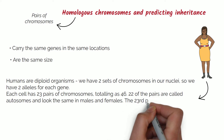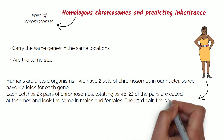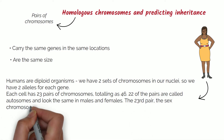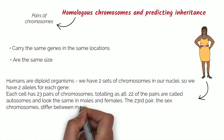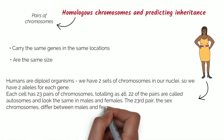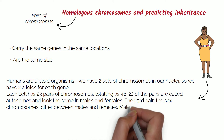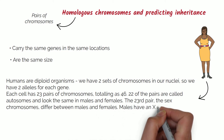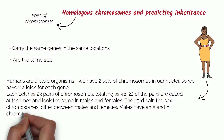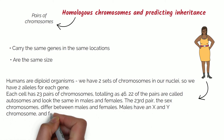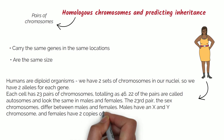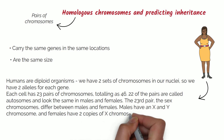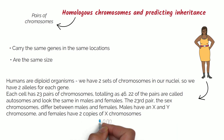The 23rd pair, or the sex chromosomes, differ between males and females. Males have an X and Y chromosome, and females have two copies of the X chromosome.